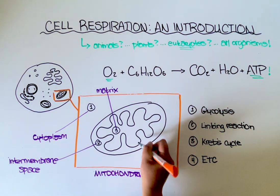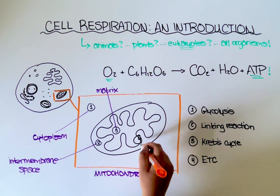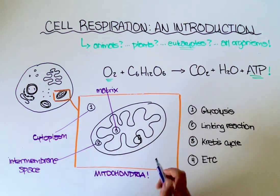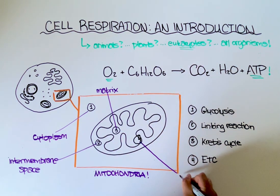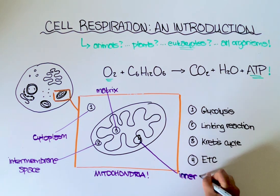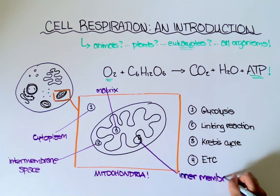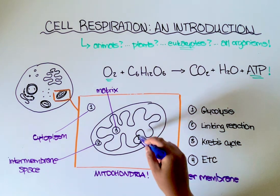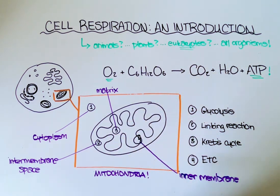Now the electron transport chain happens here, along this folded inner membrane of the mitochondria. And there's a reason why it is so folded. By having all these curves and little indentations, that increases the surface area for the proteins of the electron transport chain. And because of this high surface area, the mitochondria is excellent at just pumping out ATP. It makes many ATP molecules with each of these cycles. And that is, again, because of the surface area of that organelle.